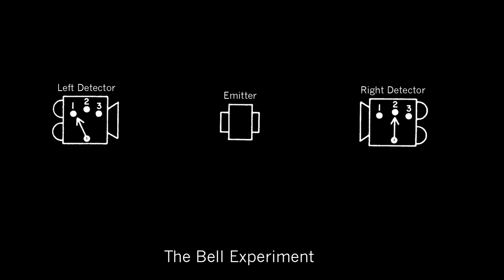In other words, for each run of the experiment — each press of the button, a particle going to each of the detectors — you could summarize the results as being the place the pointer is set (one, two, or three) and what the lights do. So if the left light lights up red and the right light lights up green, you could summarize a particular run of the experiment as being, say, one, two, red, green.